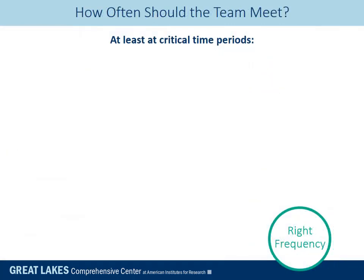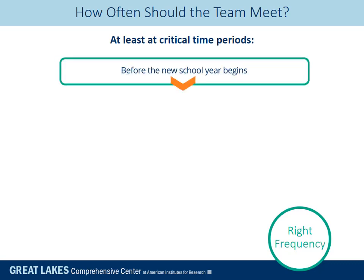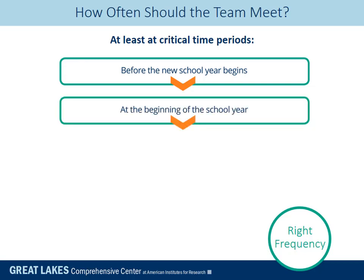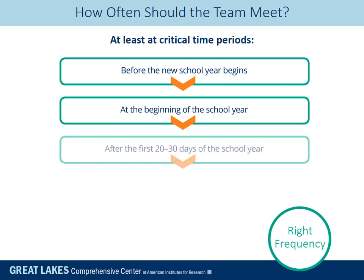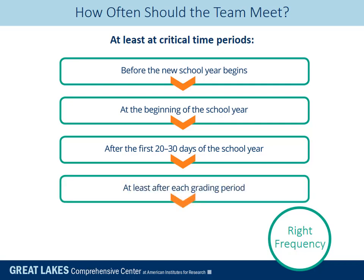How often should the eWIMS team meet? We recommend meeting at the following critical time periods: before the new school year begins; at the start of the school year to focus on students who ended the previous year with indicators of risk, as well as students who are new to the school, including the freshman class; and after the first 20 to 30 days of the school year to address students who are falling behind or failing to attend. Meetings should be held regularly throughout the school year, a minimum of once after each grading period.